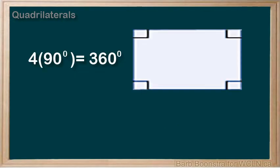In this quadrilateral, which you know as a rectangle, the angles are marked as 90 degrees. 4 times 90 equals 360 degrees.